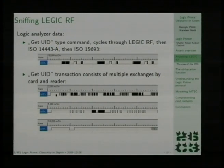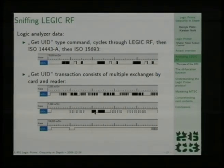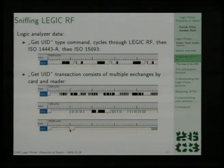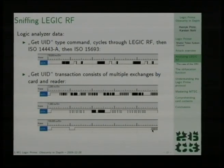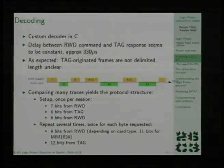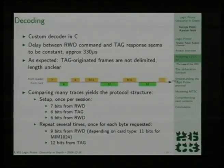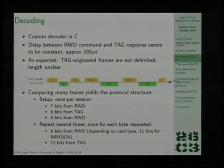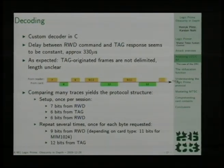If you zoom into this particular section, you will actually see the reader frames — the reader bits — and the card modulation. The reader bits are delimited by short pauses, and the time duration of each part encodes the bit. This is the subcarrier of the card that's cut off here. I then wrote a simple decoder in C to decode these traces, as I did before with the MIFARE protocol, and experimentally figured out how big the delay from reader frame to card frame is.